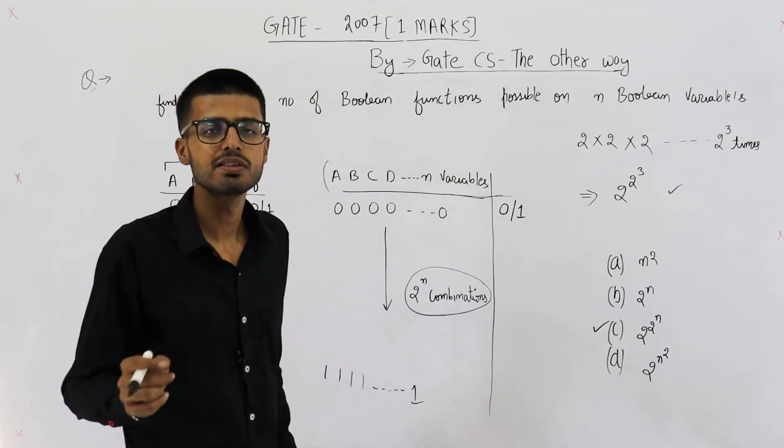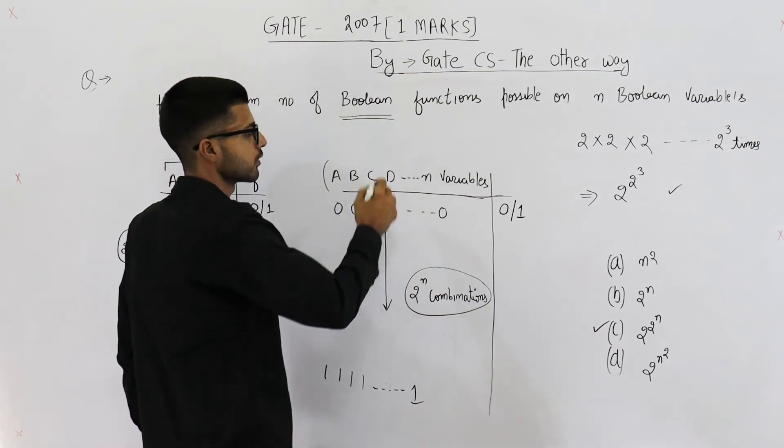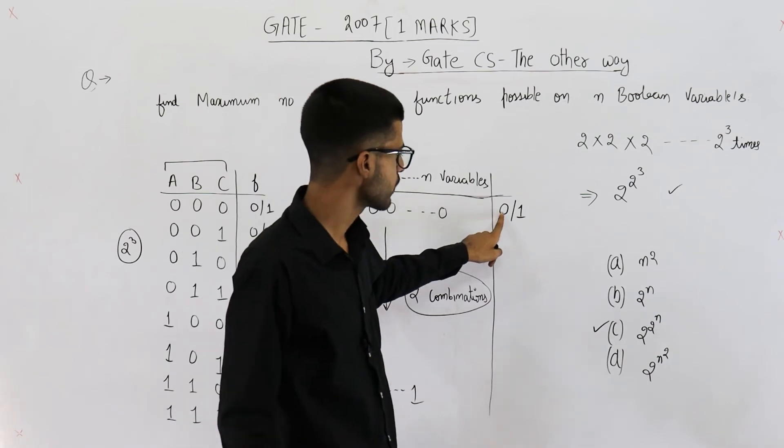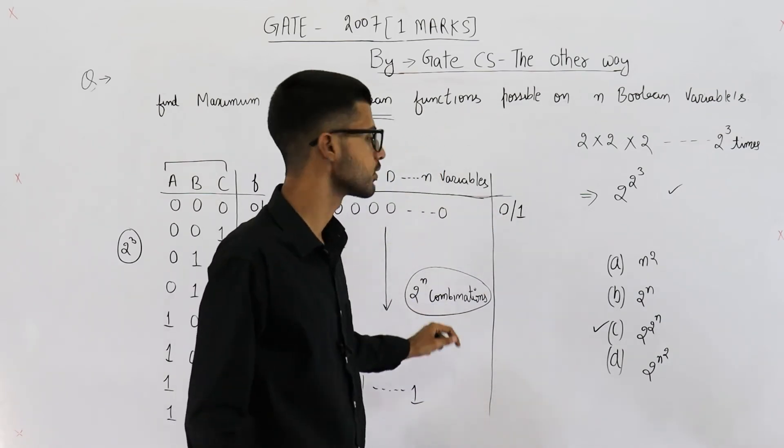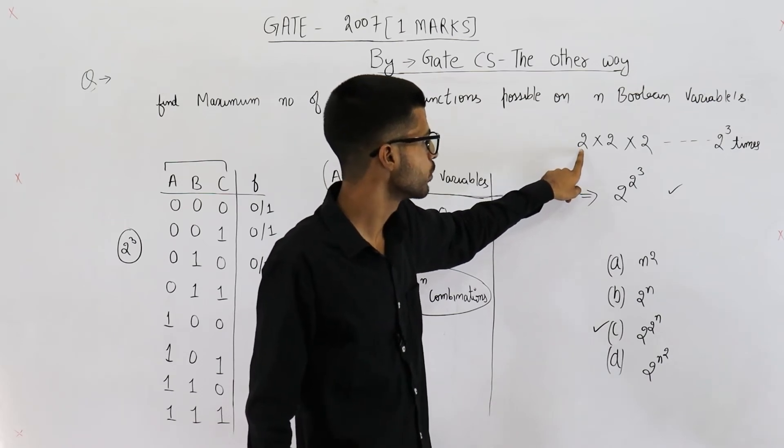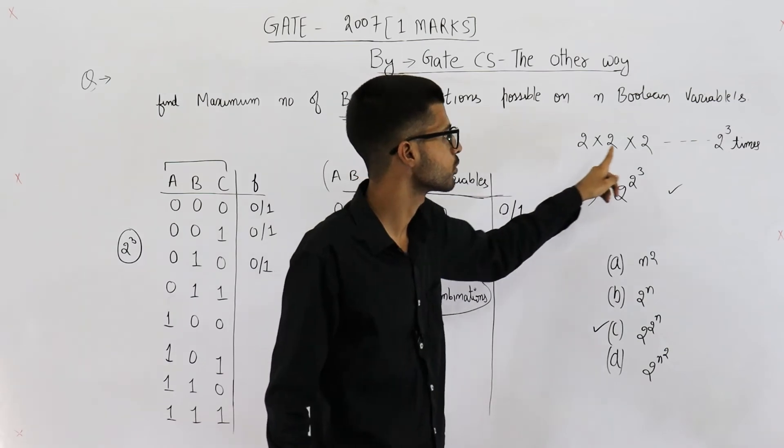Output can only be 0 or 1 because the function is boolean according to the question. So you can write 0 or 1 at all of these 2 raised to the power n combinations. That means you have 2 possibilities for first input, 2 for second input, so on.